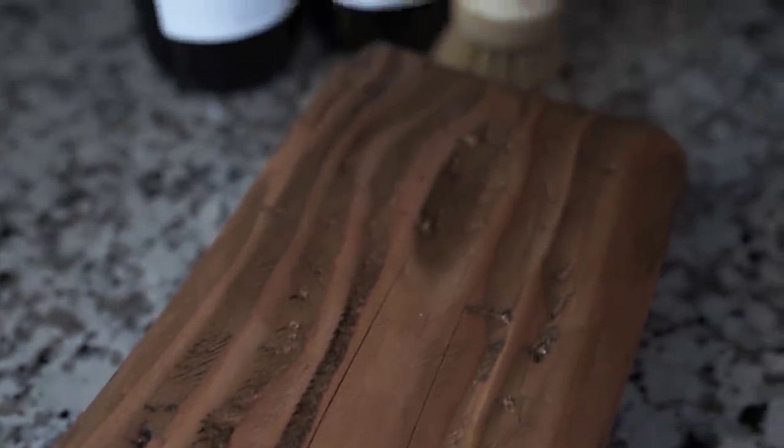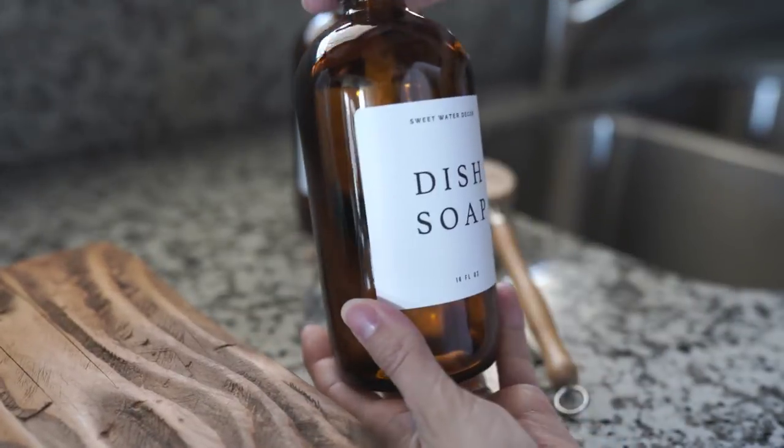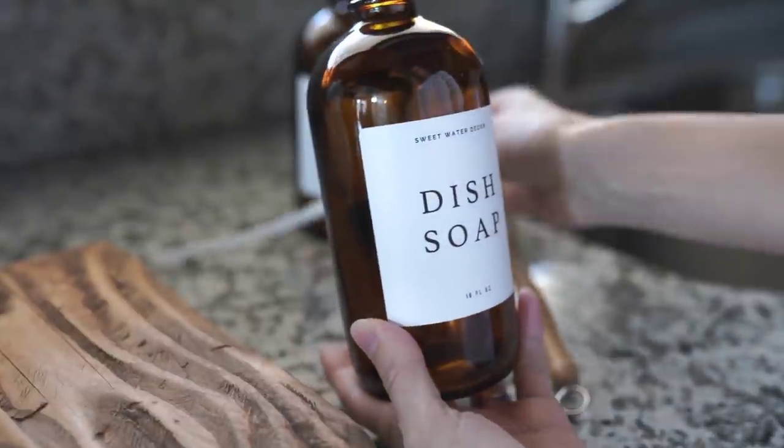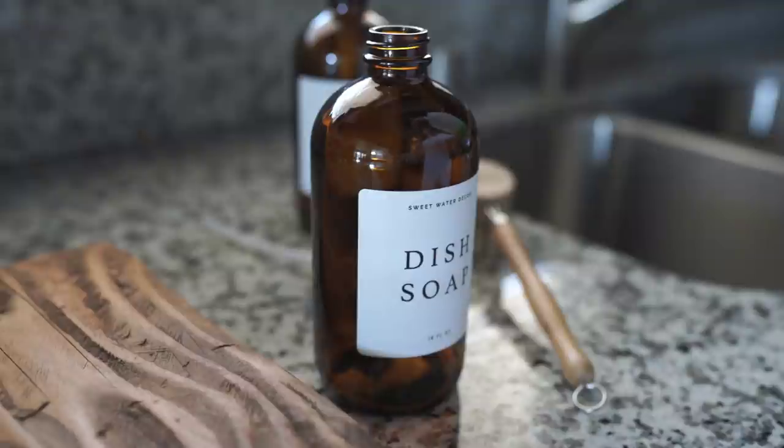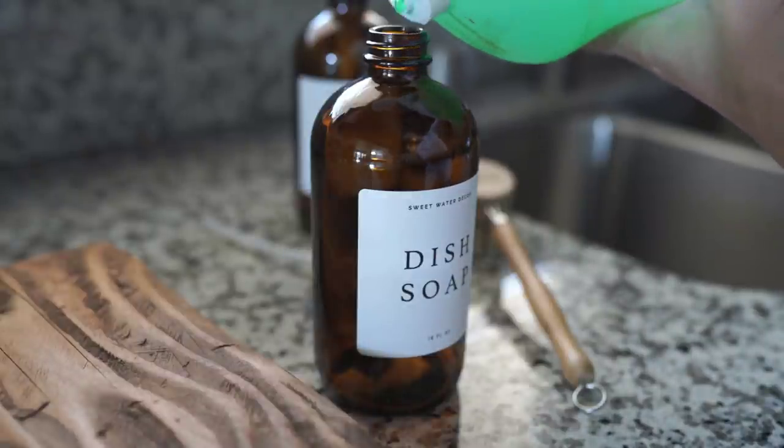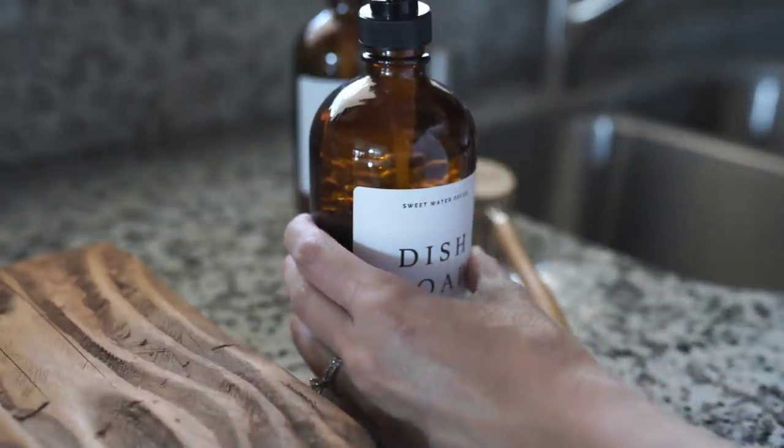We were way overdue for new soap dispensers. I found these on Amazon for fall. I love this amber color and it has kind of a plastic type label so they don't get ruined with water and all that type of stuff. They're really cute. I will link these and everything else that I use here down below.